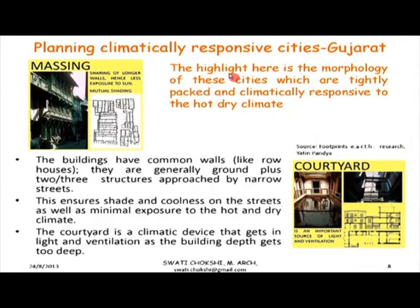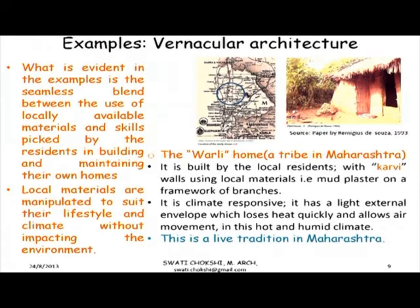Gujarat cities have a tight morphology with narrow shaded streets, responding to the hot and dry climate. The homes mostly have courtyards, which are devices that help bring light into narrow and deep structures. These are planned with common walls so as to reduce exposure to the harsh climate. These vernacular examples of buildings typically show a blend of local materials, building skills, and the manipulation of these to suit the climate with minimum environmental impact.